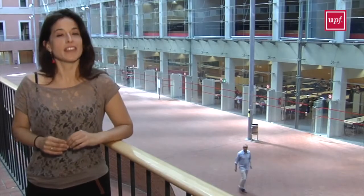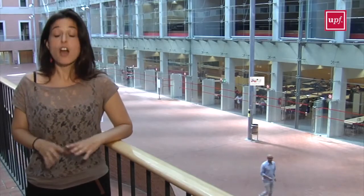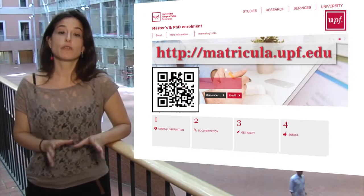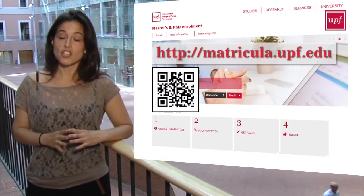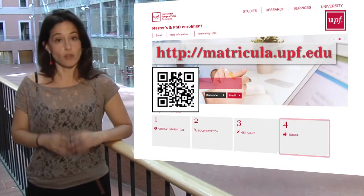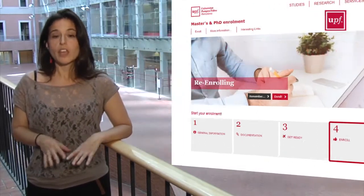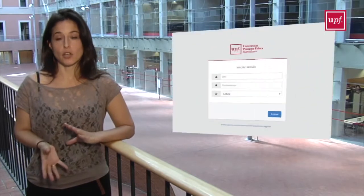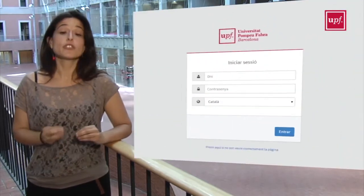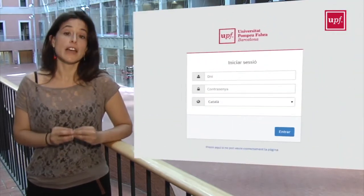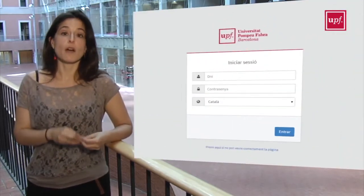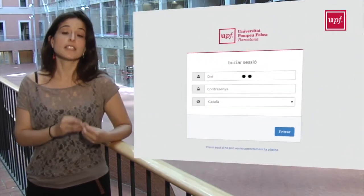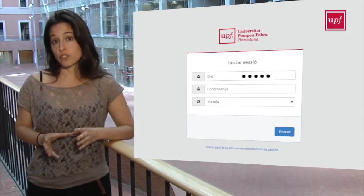Are you ready? Okay, so let's start. First, go to the registration page and click on Enroll Now. Here is what you need to know about the access codes: your username is your ID number without spaces, dashes, or full stops.